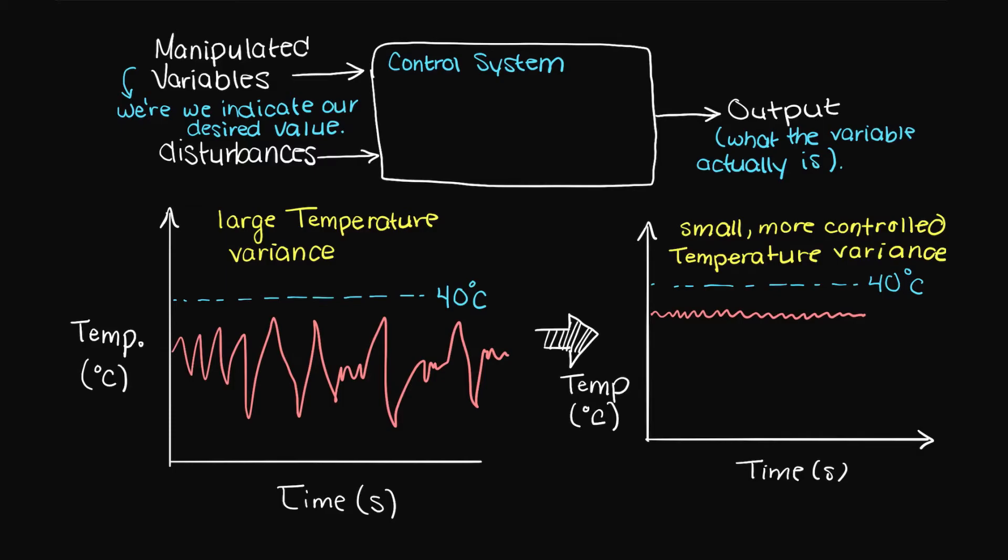In summary, a control system is a way for us to regulate or control a given process, whatever that may be, and that is what this playlist will focus on. Our control system could be something relatively simple,